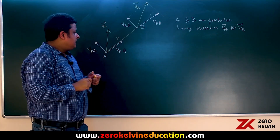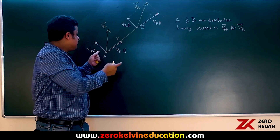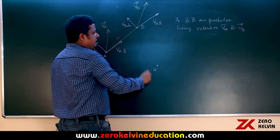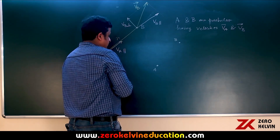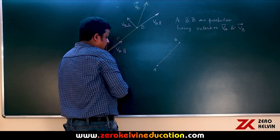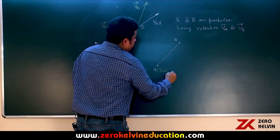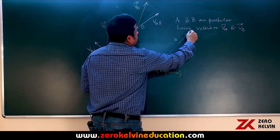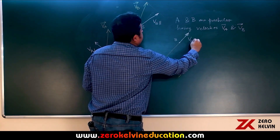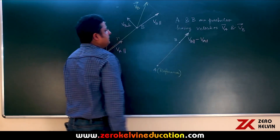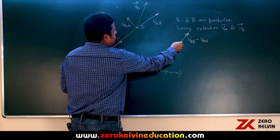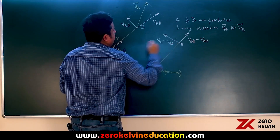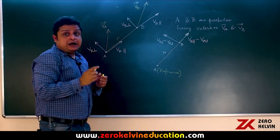We will fix our reference frame to one of the particles — I will choose A. So A is our reference frame, or the observer. With respect to A, the velocity of B has two components: one component is Vb parallel minus Va parallel, and the other component is Vb perpendicular minus Va perpendicular, while the distance between A and B is R at this instant.